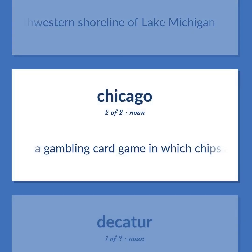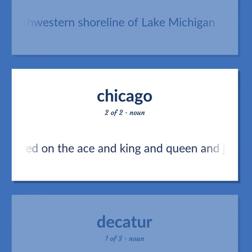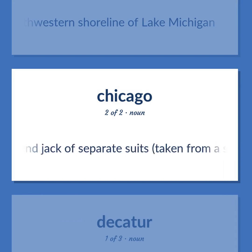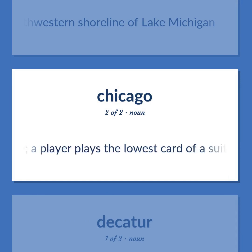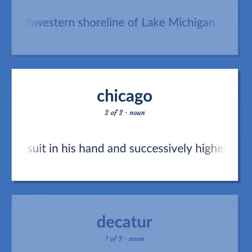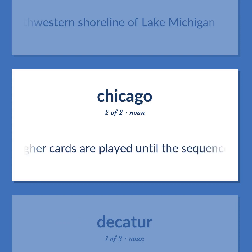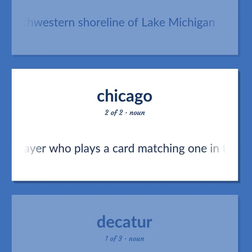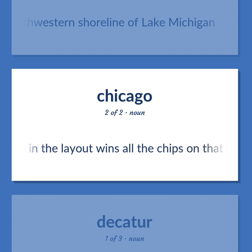Faro: A gambling card game in which chips are placed on the ace, king, queen, and jack of separate suits taken from a separate deck. A player plays the lowest card of a suit in his hand and successively higher cards are played until the sequence stops. The player who plays a card matching one in the layout wins all the chips on that card.